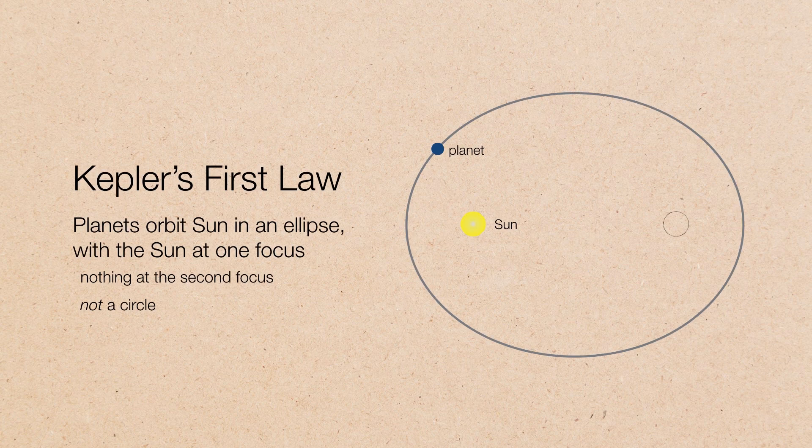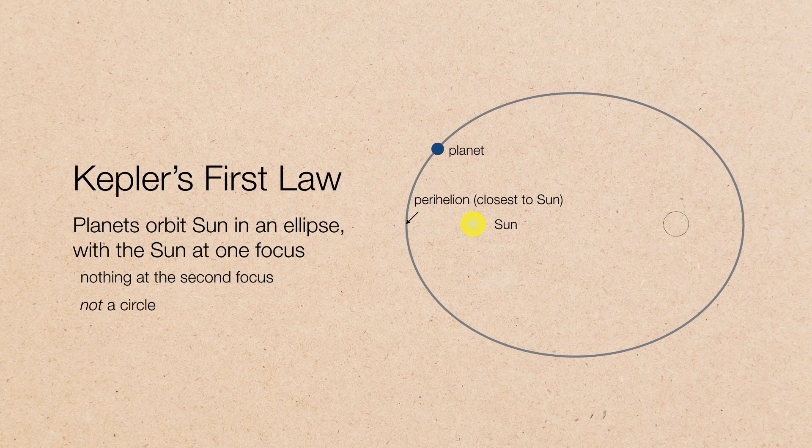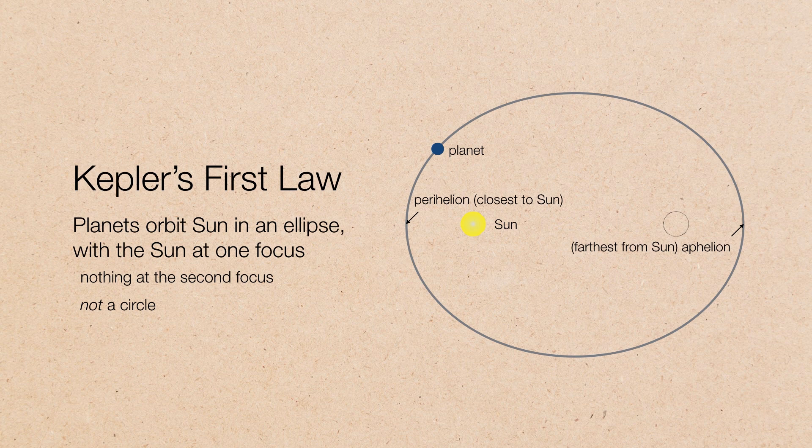So, to recap, Kepler's first law states that planets orbit the sun in an ellipse with the sun at one focus and nothing at the second. Now, when it comes to planets orbiting the sun, there are two locations we should point out. First is the closest position to the sun. That's called perihelion. And the most distant position from the sun is called aphelion.